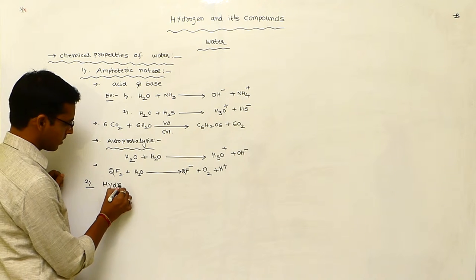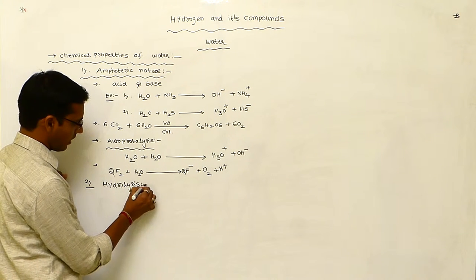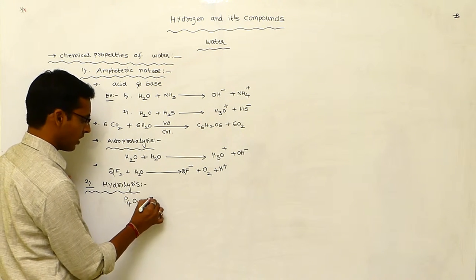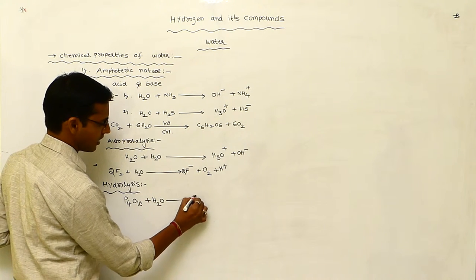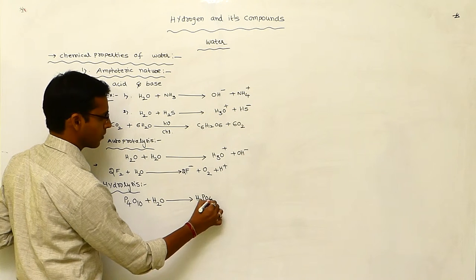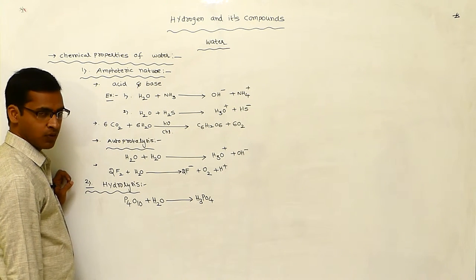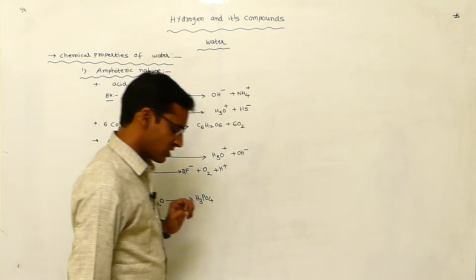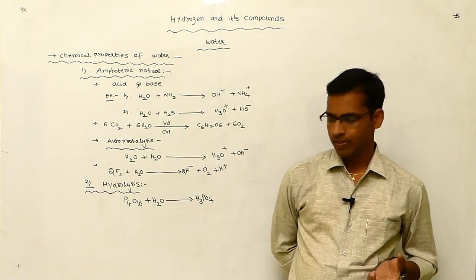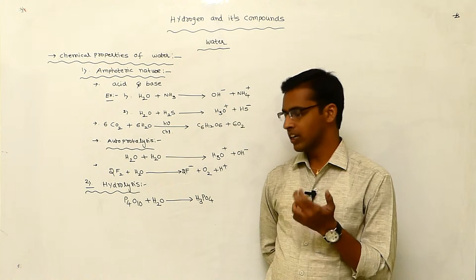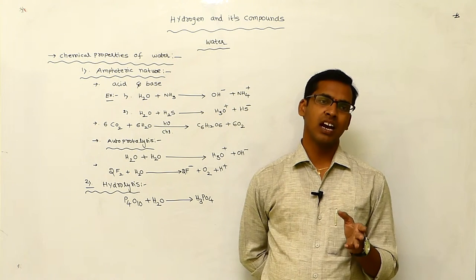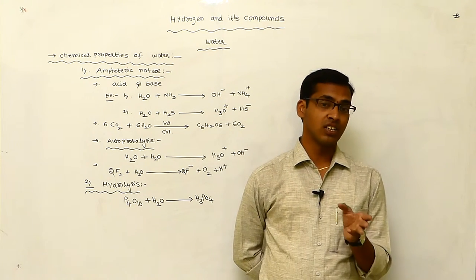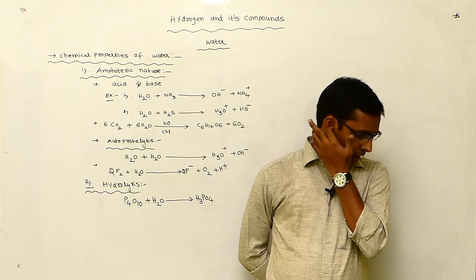Hydrolysis means oxides dissolved in water produce acidic substances, such as H3PO4. SiCl4 dissolved in water is converted to SiO2. This is the hydrolysis reaction. Non-metallic oxides dissolved in water produce acids, whereas metallic oxides dissolved in water produce a base.